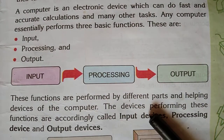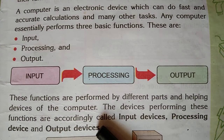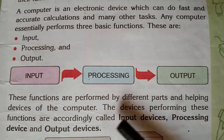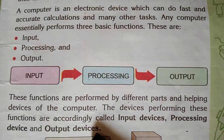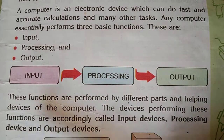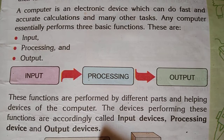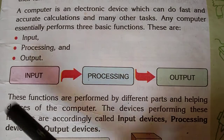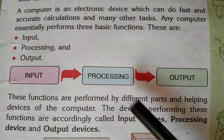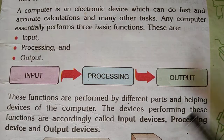These functions are performed by different parts and helping devices of the computer. The devices performing these functions are accordingly called input devices, processing device, and output devices. Processing karne wala processing device kehlaata hai, output perform karne wale output devices kehlaate hain.